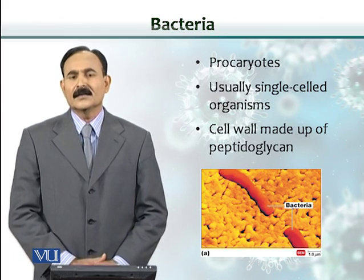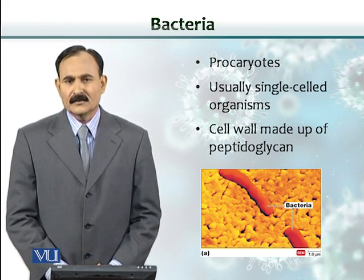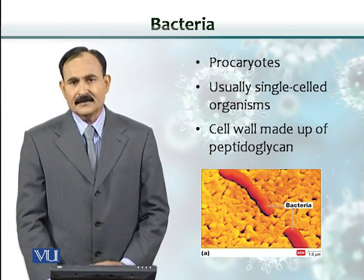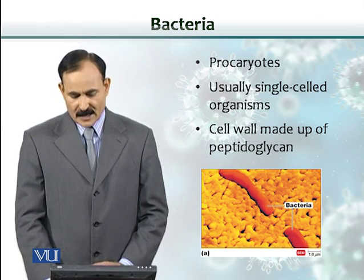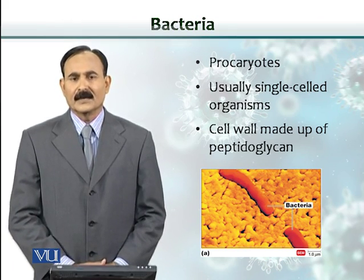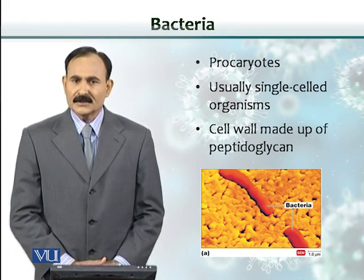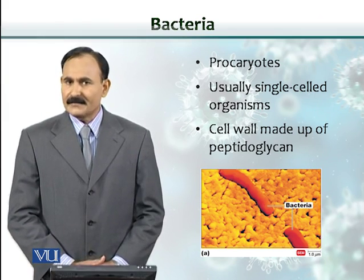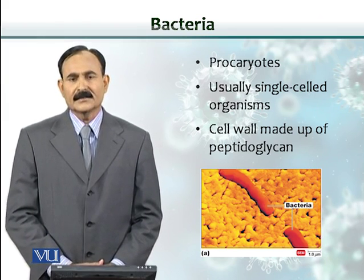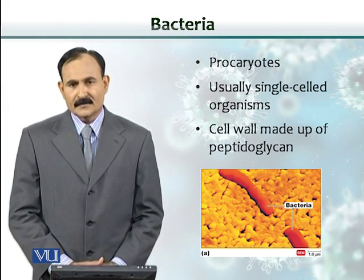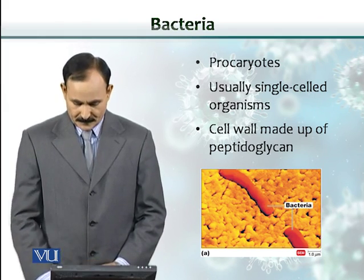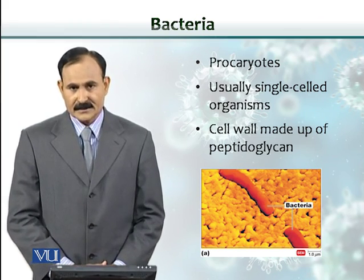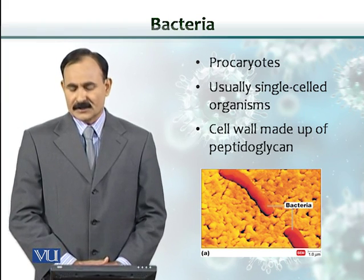Let's talk a little more about what these different microorganisms are. Bacteria, for example, are prokaryotes. They do not have a well-defined nucleus. They are usually single-celled organisms, and they have a cell wall. The cell wall contains what we call peptidoglycan. This picture shows a scanning electron image of a bacterium.